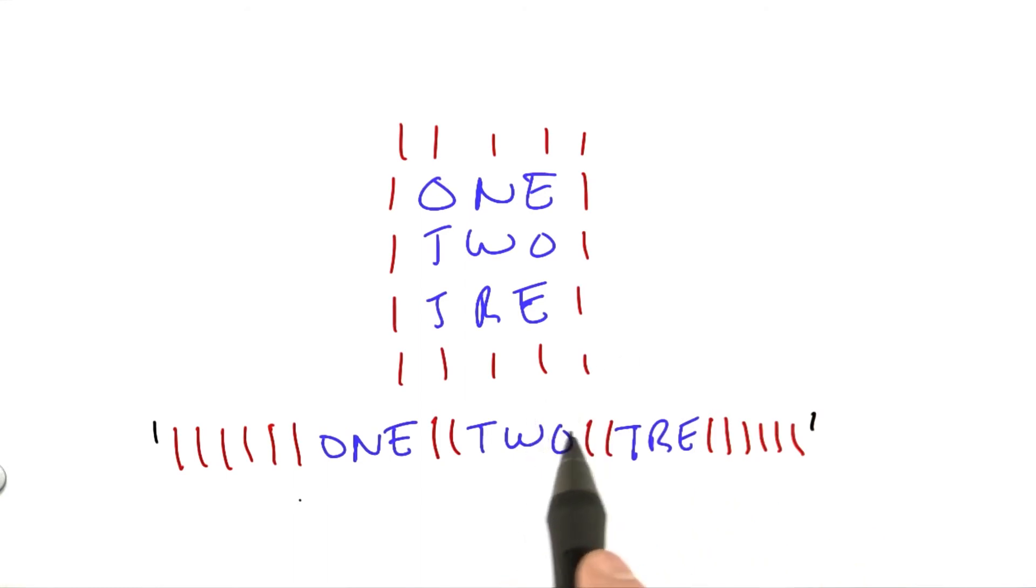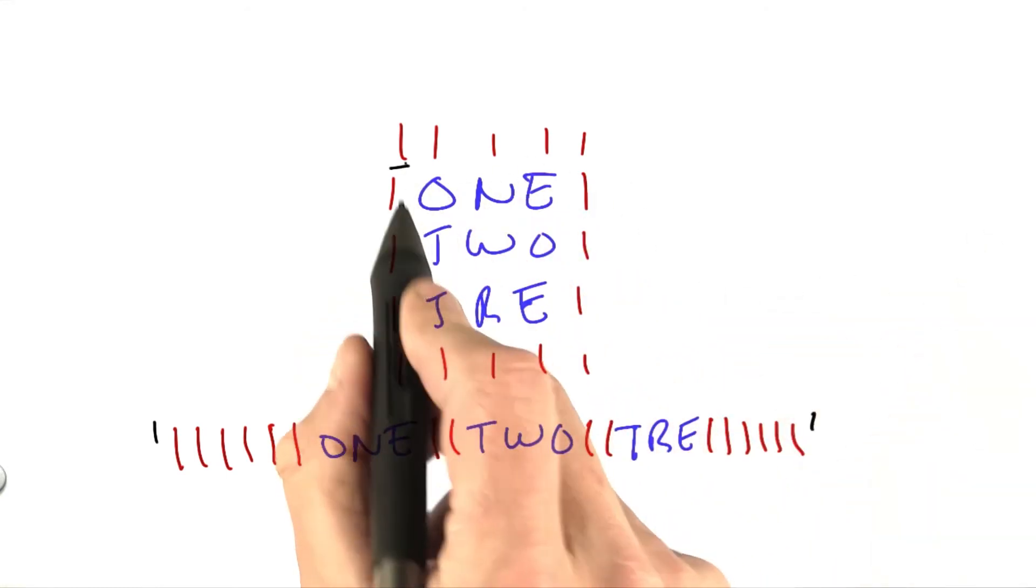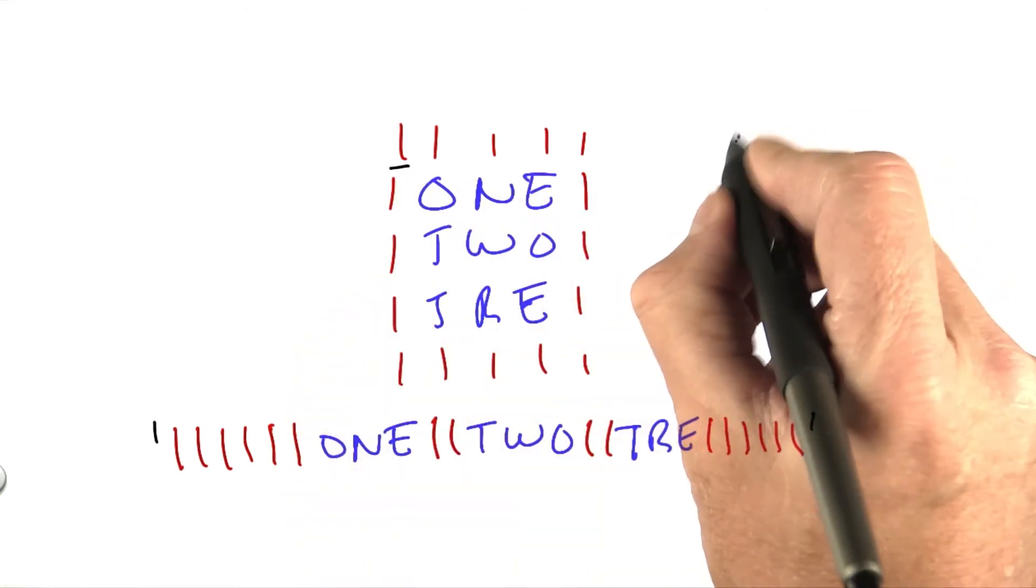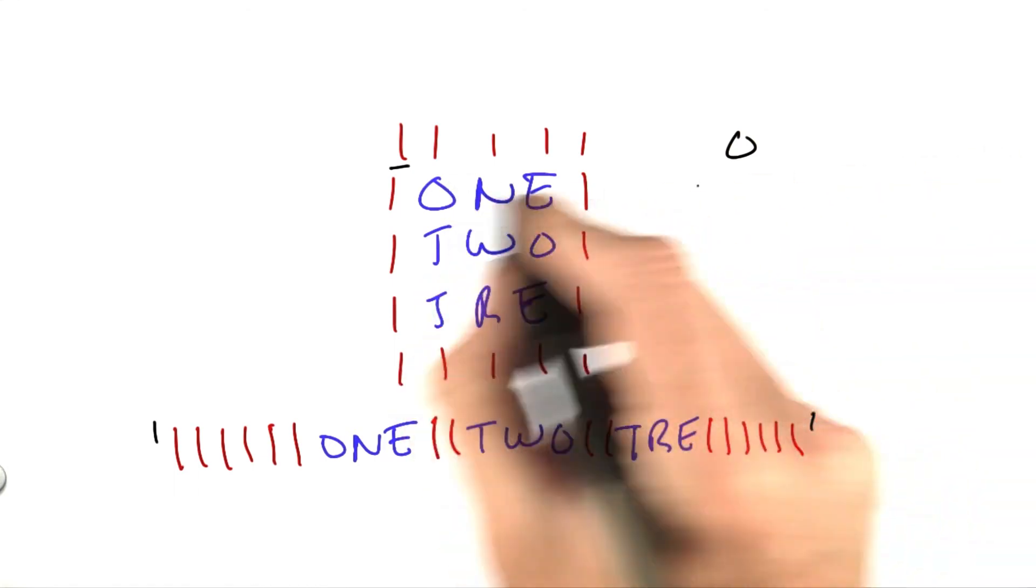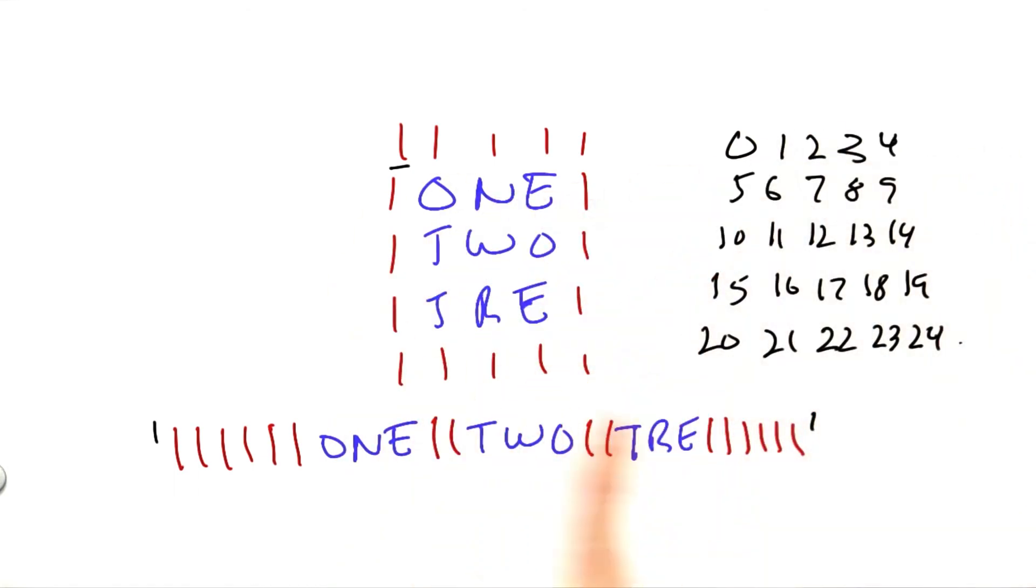Now in terms of the indexes into the array, right here would be index number 0, and we can just enumerate them out. So it's a 5 by 5 array. The indices go from 0 to 24.